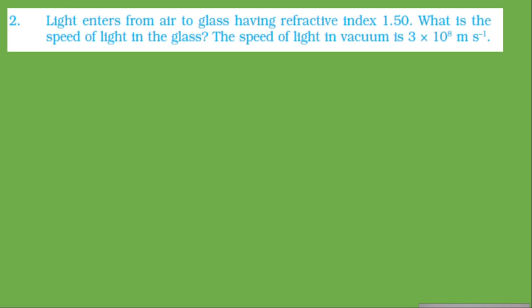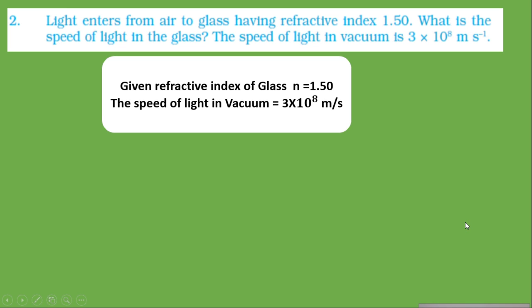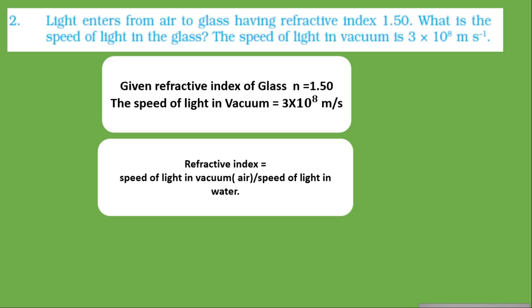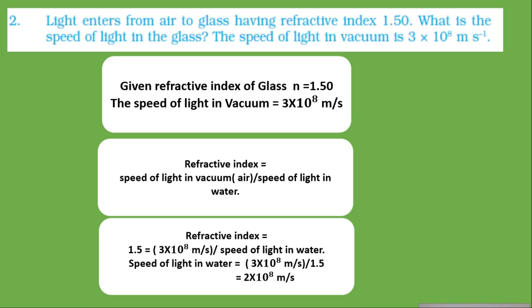Next: light enters from air into glass having a refractive index of 1.50. What is the speed of light in the glass? The speed of light in vacuum or air is 3 × 10⁸ m/s. The formula for refractive index is: speed of light in the first medium divided by the speed of light in the second medium. The refractive index is given as 1.50 — remember, refractive index is a pure number with no units. Substituting the values gives the speed of light in glass as 2 × 10⁸ m/s.